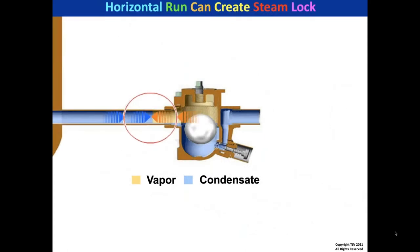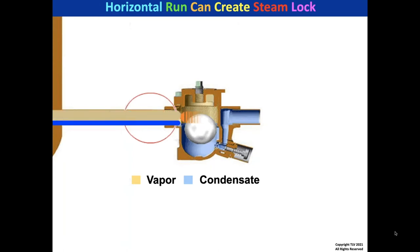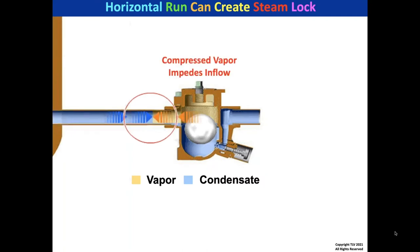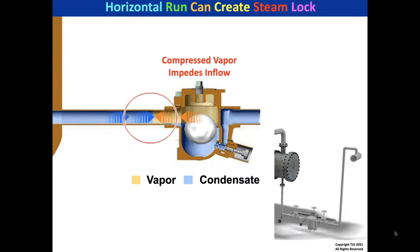Most people don't realize that if a trap is on a long horizontal line, condensate is so small by volume that it runs across the bottom of the pipe while vapor runs across the top. The trap sees vapor — it sees steam — and it locks. It thinks it's supposed to stop steam from leaking. This compressed vapor impedes flow, known as a steam lock or vapor lock. The simple mitigation is to install a drop-down to the trap, not have a long horizontal run after the drop-down.